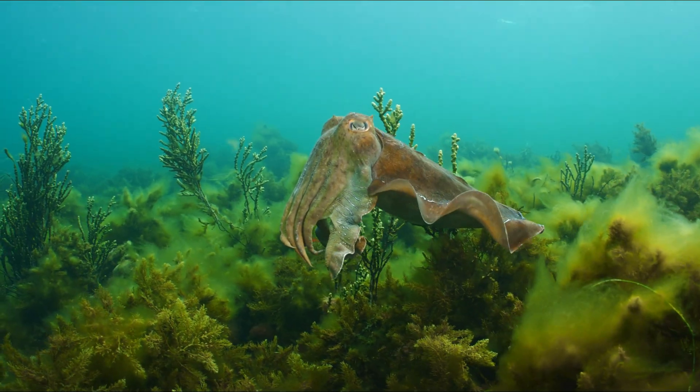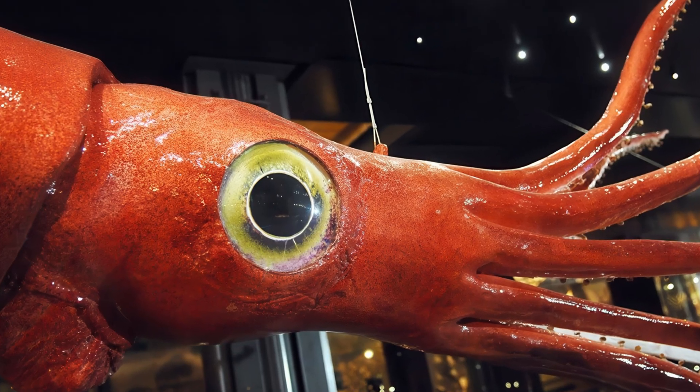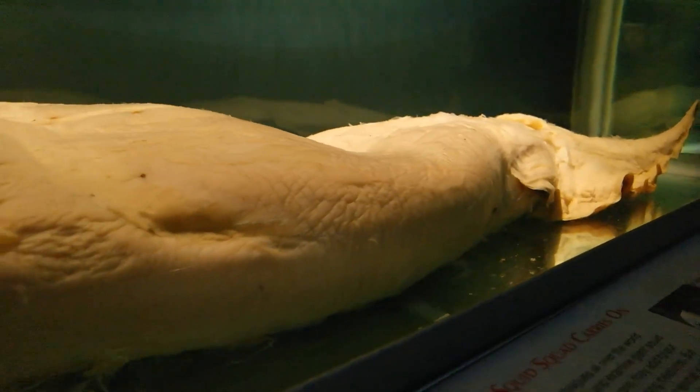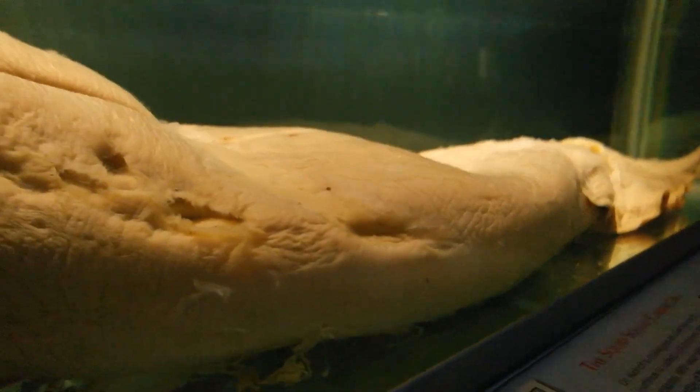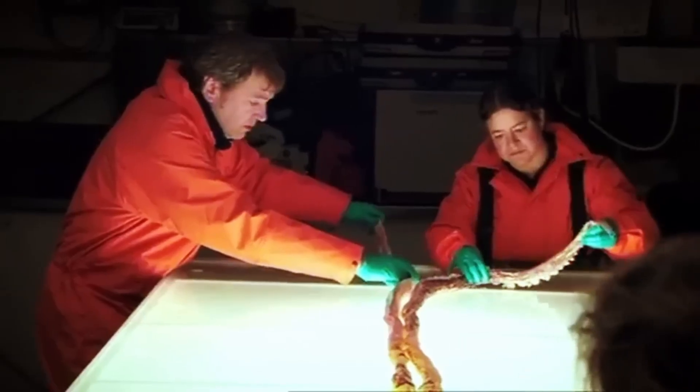There could be dozens of undiscovered squid species out there, perhaps some even larger than Architeuthis dux. Some oceanographers believe there might be giant versions of bigfin squids moving so slowly that submarines could pass right beside them without ever noticing.